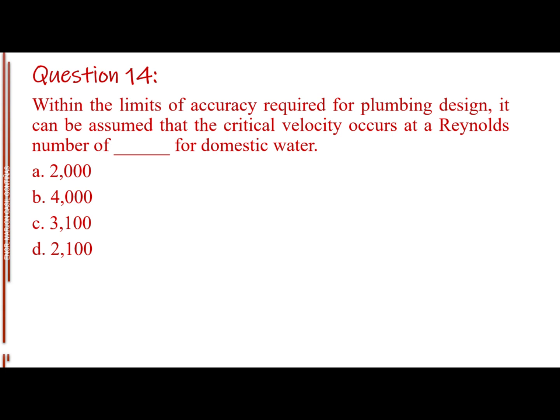Question number 14. Within the limits of accuracy required for plumbing design, it can be assumed that the critical velocity occurs at a Reynolds number of blank for domestic water. Letter A, 2000. Letter B, 4000. Letter C, 3100. Letter D, 2100. The answer is letter D, 2100.